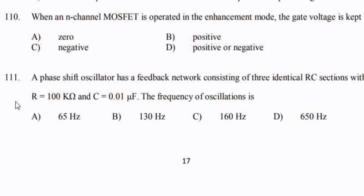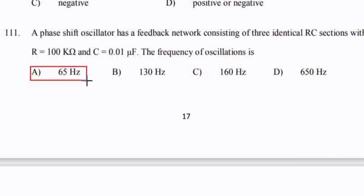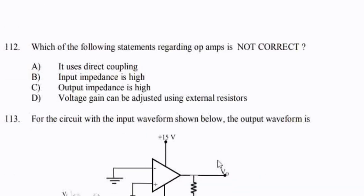A phase-shift oscillator has a feedback network consisting of three identical RC sections with R equal to 100 kΩ and C equal to 0.01 microfarad. Find the frequency of oscillation.